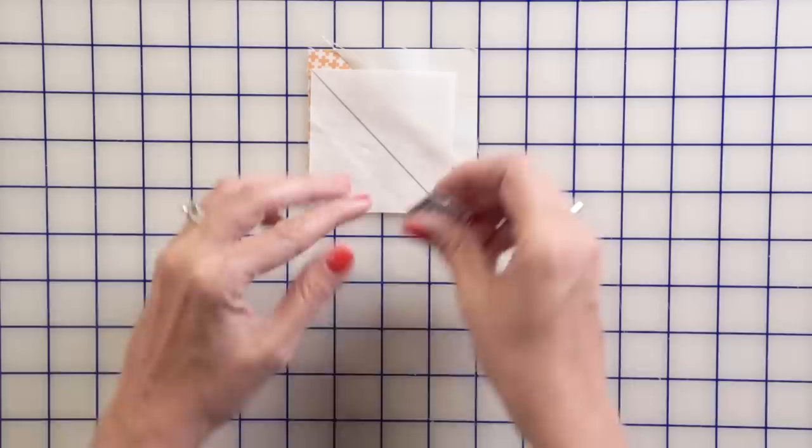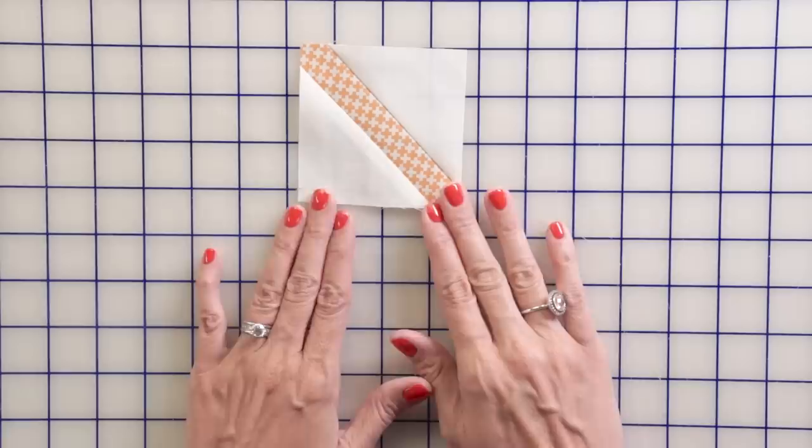Your unit will then look like this. Then you're going to take another fabric E square, place it on the bottom left corner, stitch directly on the line, and trim a quarter inch away. And this is your stem unit and you will need one for each block.